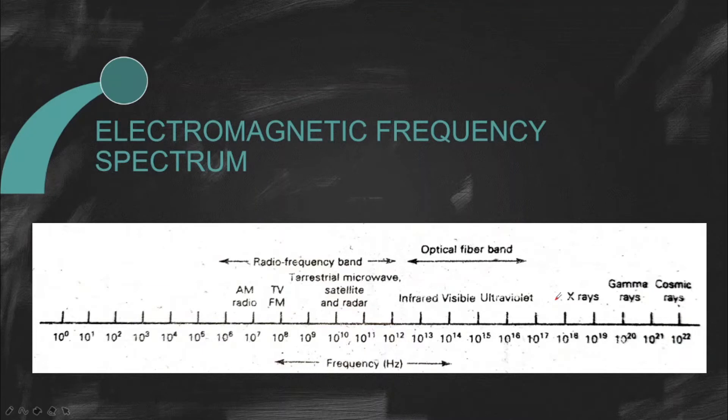Electromagnetic frequency spectrum. Ang electromagnetic frequency spectrum is the range of all electromagnetic radiation. Kung mapapansin natin, ang electromagnetic spectrum ay divided into subsections or bands, each having a different name and boundary.